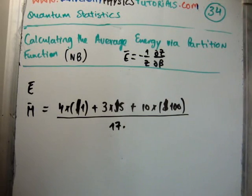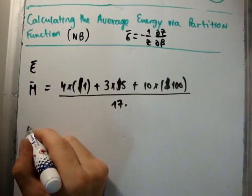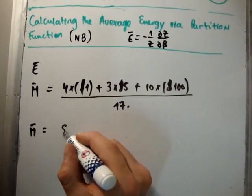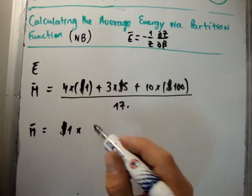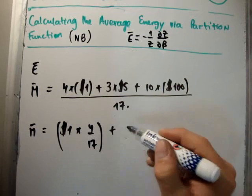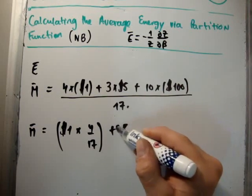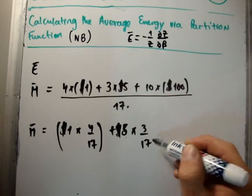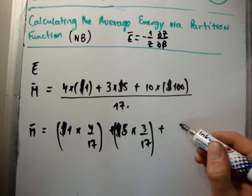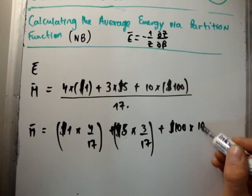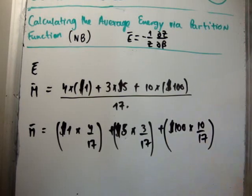But another way of looking at this is as follows. You could instead say your average money is your money multiplied by the probability of having that money: $1 times 4 over 17 plus $5 multiplied by 3 over 17, plus $100 multiplied by 10 over 17. You could look at it that way.